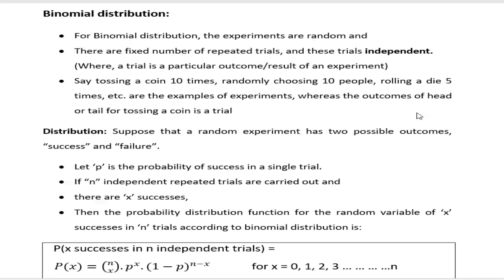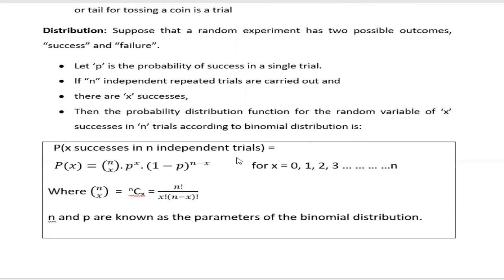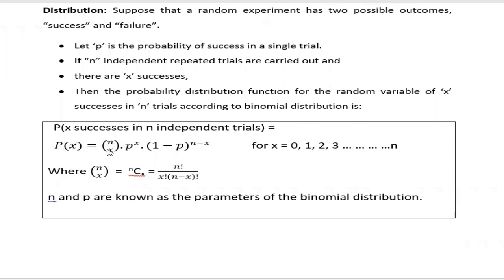Suppose there is a random experiment with two possible outcomes: success and failure. Let p be the probability of success in a single trial, and there are n independent repeated trials. Let x denote the number of successes. Then the probability of getting x successes in n trials is expressed by the binomial distribution function: P(x) = nCx × p^x × (1−p)^(n−x), where x can take values 0, 1, 2, up to n.